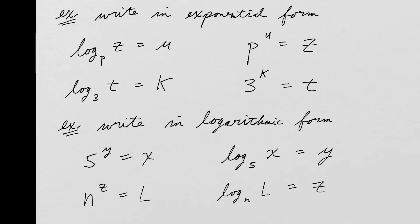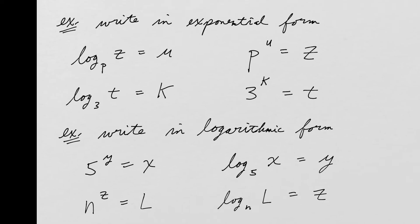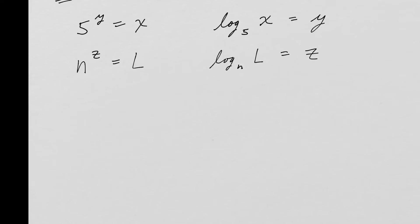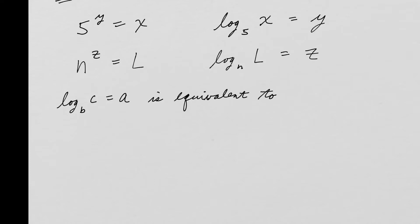All I'm doing is using this property: log base B of C equals A is equivalent to B to the A equals C. Just using that to do those examples.